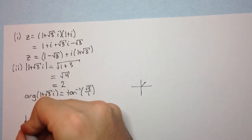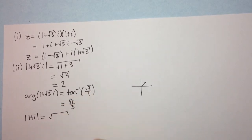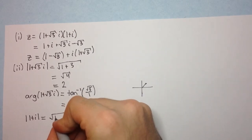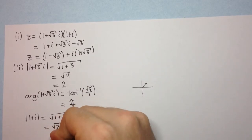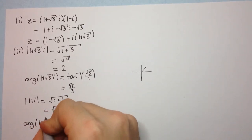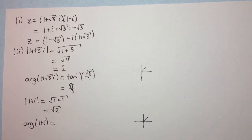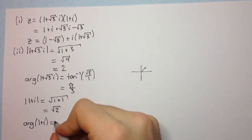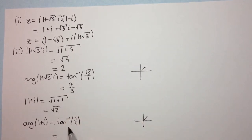Now let's look at (1 + i). The modulus is the square root of 1 squared plus 1 squared, which is √2. The argument of (1 + i) is also in the first quadrant, so it's tan inverse of 1 over 1, which is 45 degrees, or π/4 radians.